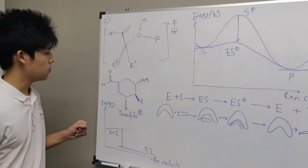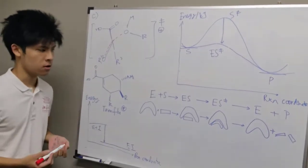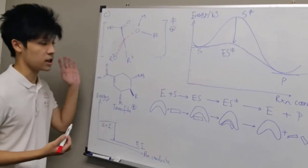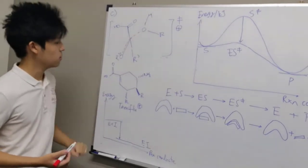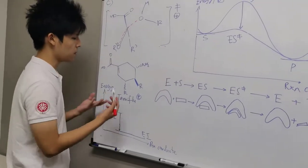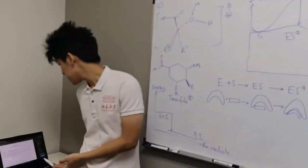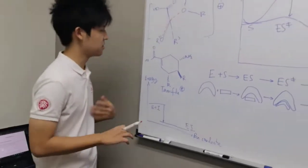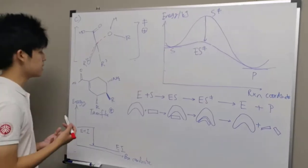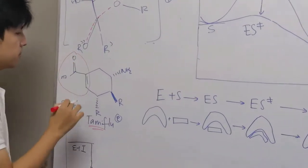For the third part, we are asked to suggest why Tamiflu is a good inhibitor for neuraminidase, which is the enzyme that catalyzed our initial reaction. Let's look at Tamiflu. The first thing we notice is that Tamiflu has a similar structure to our reactant, which is sialic acid.